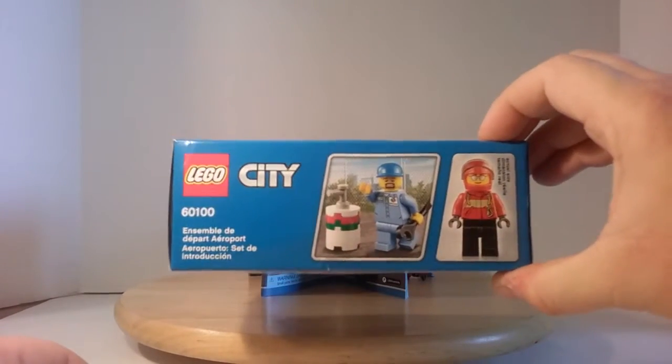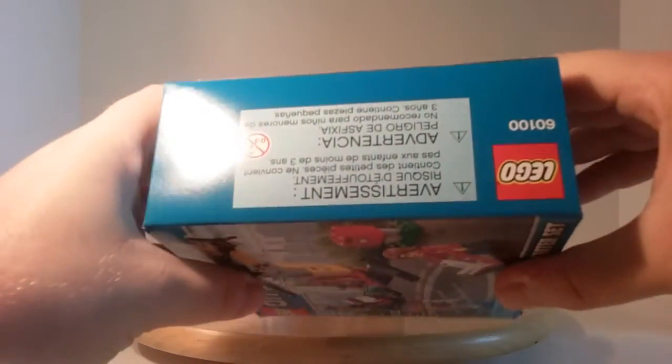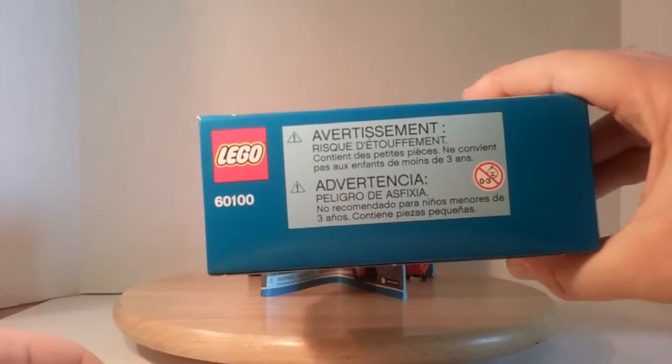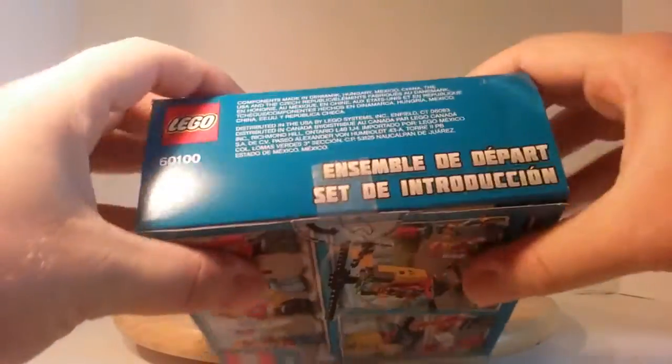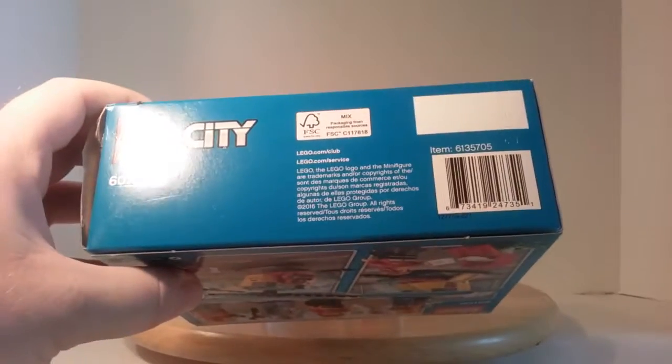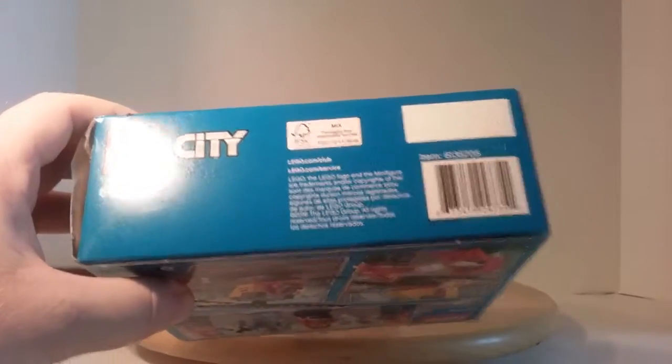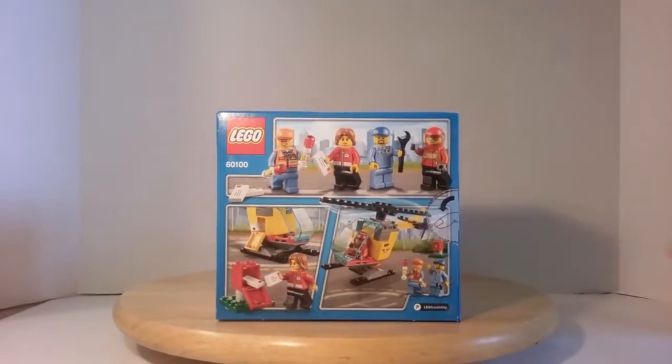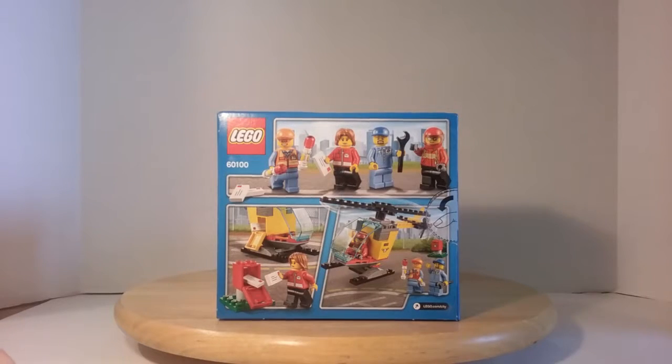So that is the front of the box. Here is the top, the left side, the right side, the bottom, which with unimportant information other than the barcode when you purchase the product, and then the back which shows the very few features about the set.